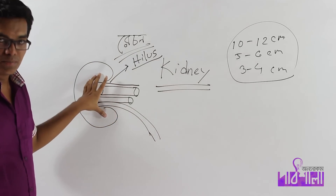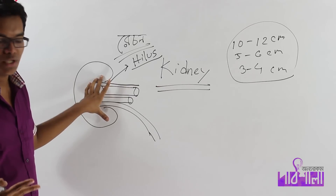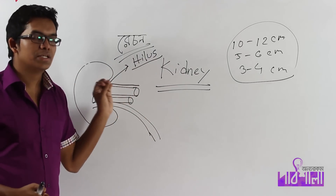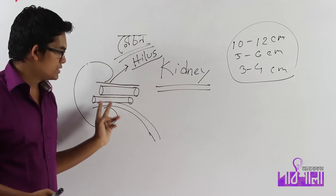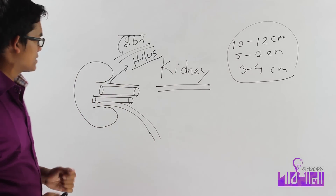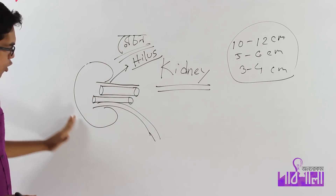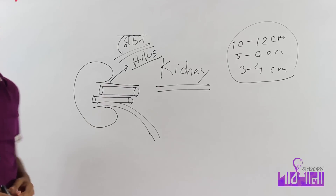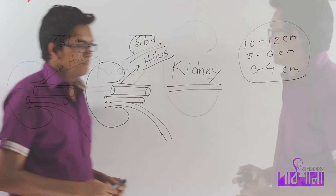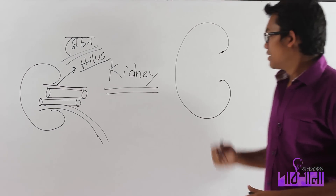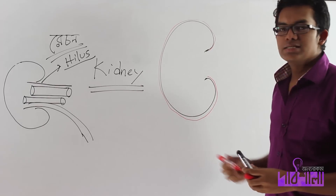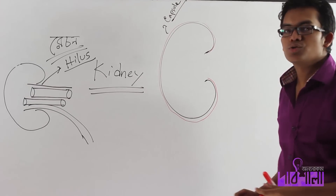হায়ালাস — আমাদের নার্ভ, নার্ভ, আমাদের সাপ্লাই — which is the number of imperfections. We have to look at the trunk of the kidney, which we call the capsule. The outer covering of the kidney is called the capsule, and the capsule is connected to the inner structure.